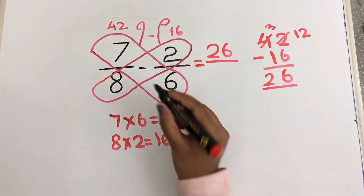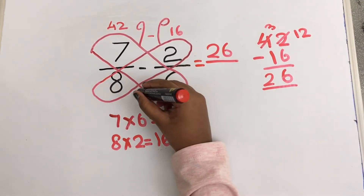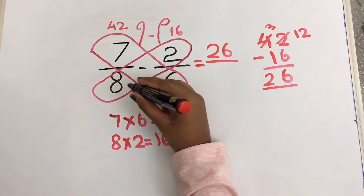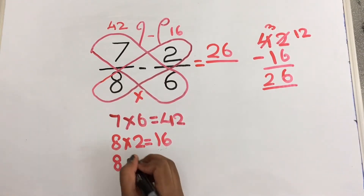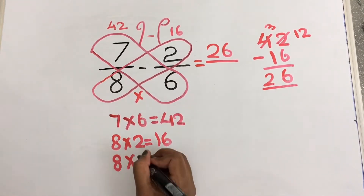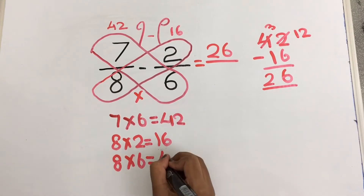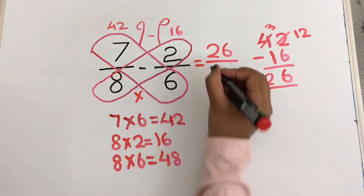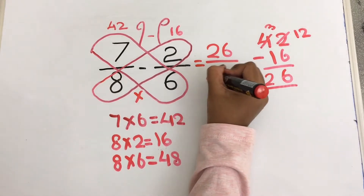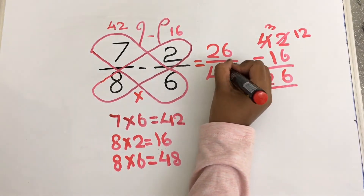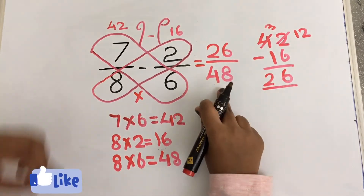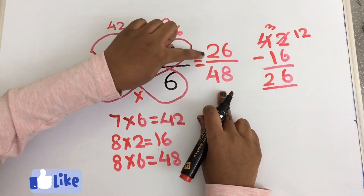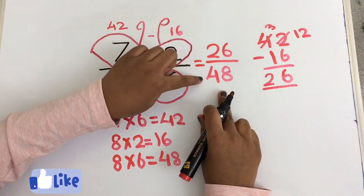Now I am going to multiply 8 into 6. 8 into 6 equals to 48. I am going to write it here as the denominator. So the answer is 26 by 48.